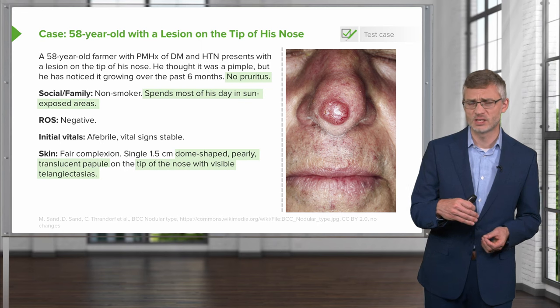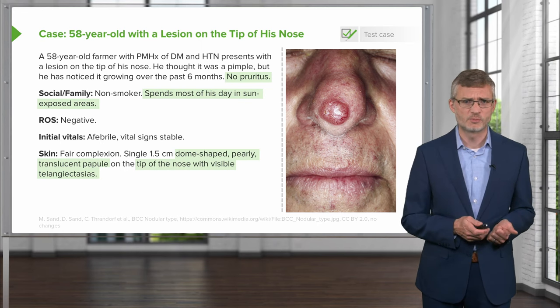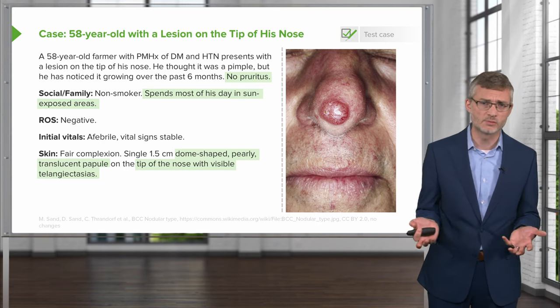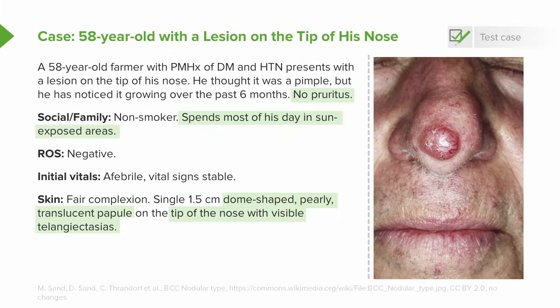Going back to our patient, there's no evidence of pruritus, which is pretty typical for basal cell carcinoma lesions. This patient spends most of his day in sun-exposed areas, so we're thinking about skin cancer — and basal cell carcinoma is one of the more common types. A dome-shaped, pearly, translucent papule on the tip of the nose with visible telangiectasias and rolled-up borders is really a very good example of a nodular type of basal cell carcinoma.